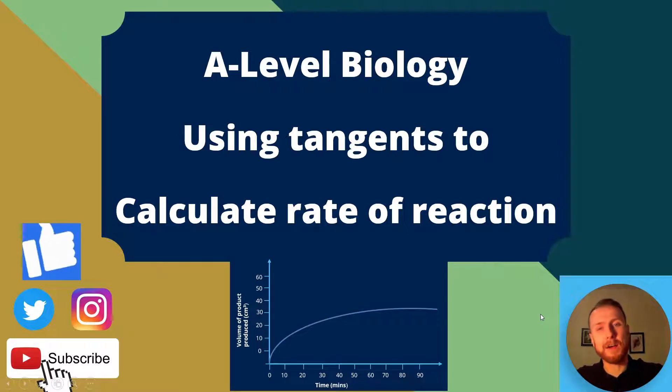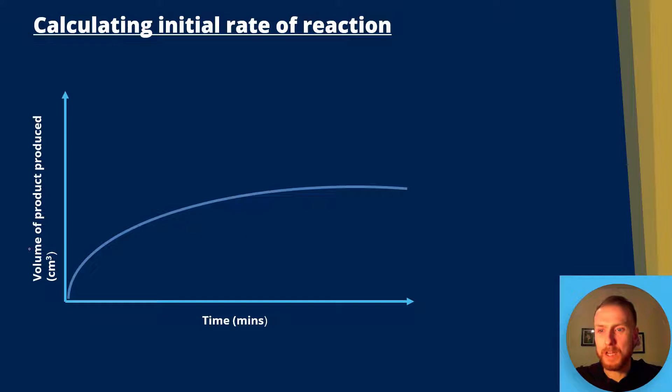Using tangents to calculate the rate of reaction is something my students have found tricky in the past, but my goal here is to make it simple for you today. So if we take a graph here, we can see we've got volume of product produced in centimeters cubed - that's our y-axis, our dependent variable that we're measuring. Now on the x-axis, we've got our time.